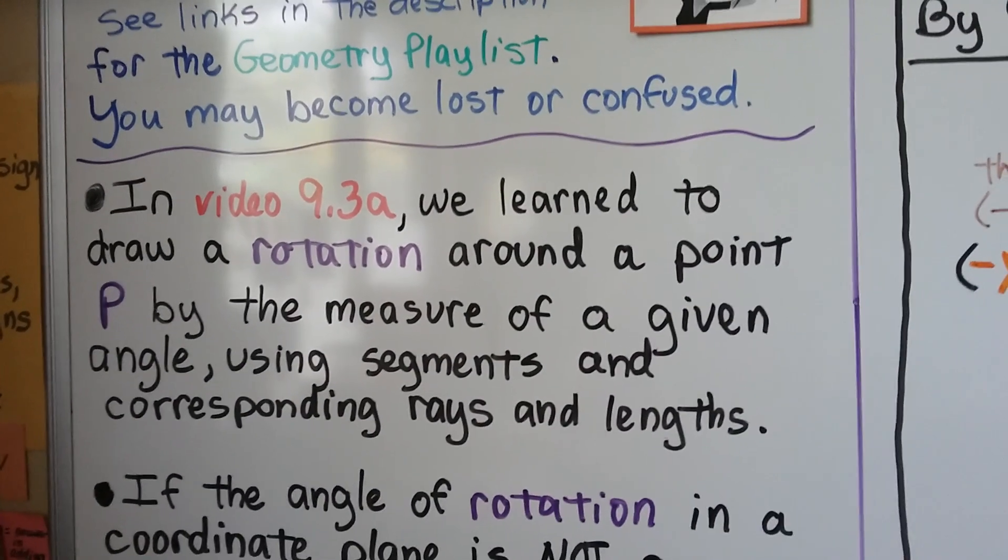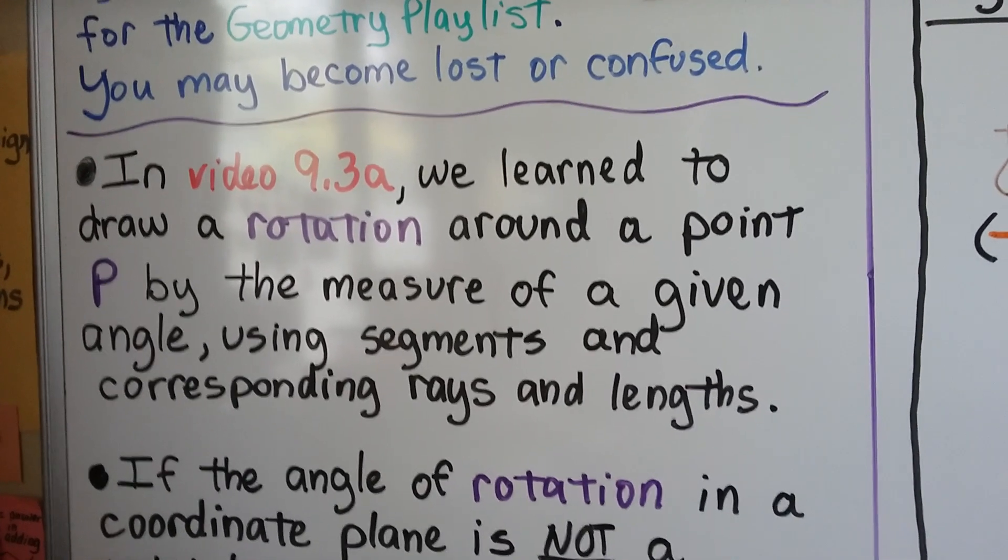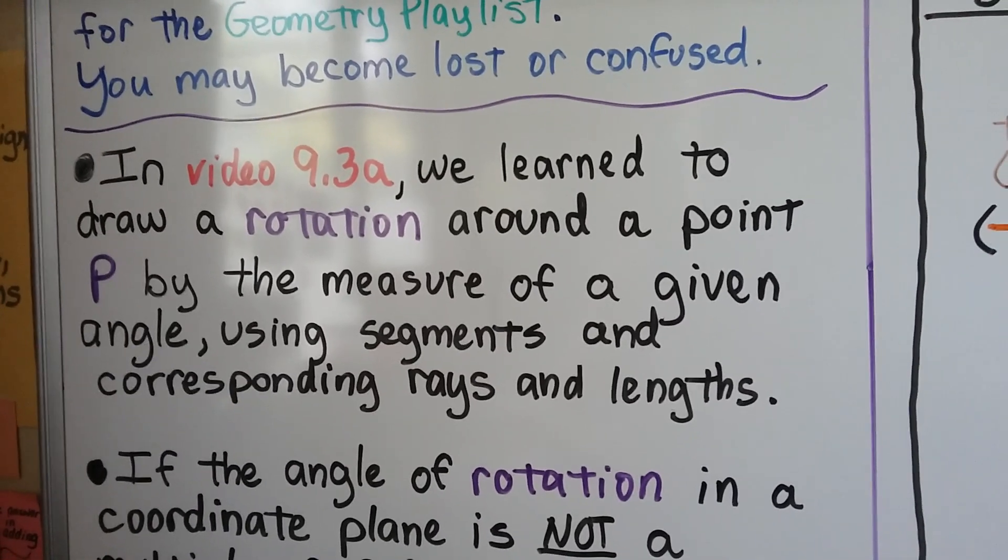In 9.3a, we learned to draw a rotation around a point p by the measure of a given angle using segments and corresponding rays and lengths.